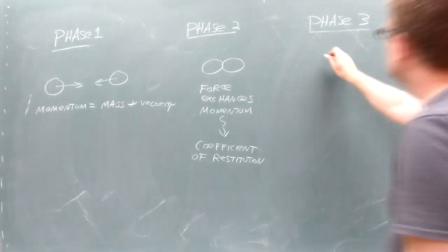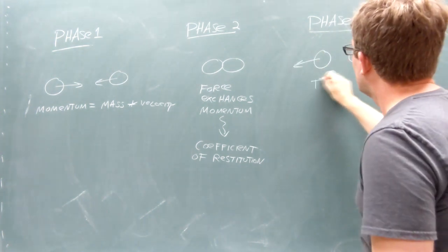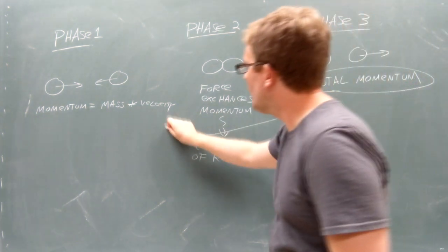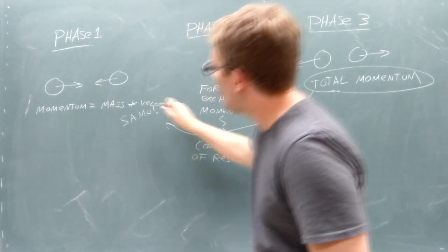In Phase 3, the colliders move along at their new, outgoing velocities. The outgoing velocities will always give you the same total momentum as the incoming velocities did.